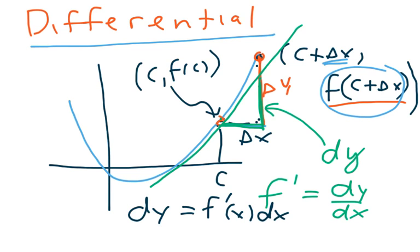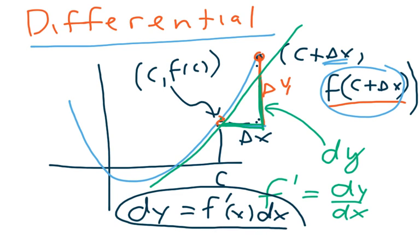This gives us our definition of differential, which is on page 232 in the book: dy equals f prime of x times dx. That is the definition of differential.